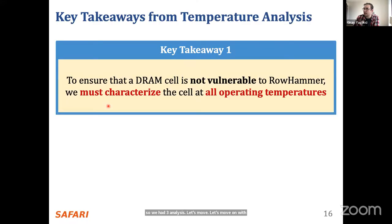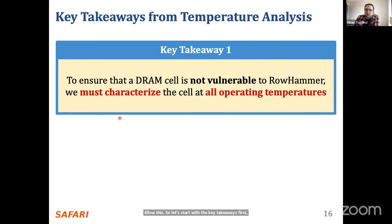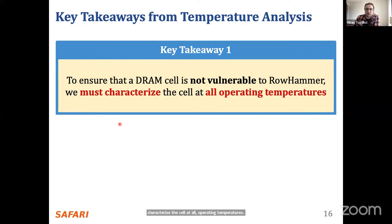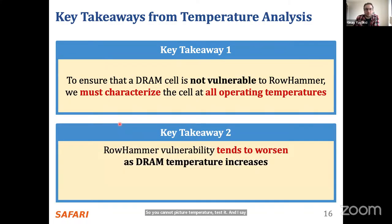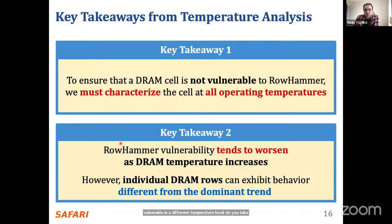The first key takeaway is that to ensure a DRAM cell is not vulnerable to row hammer, we have to characterize the cell at all operating temperatures. You cannot pick one temperature, test it, and say the cell is not vulnerable — it might be vulnerable at a different temperature level. Key takeaway two says that row hammer vulnerability tends to worsen as DRAM temperature increases; however, individual DRAM rows can exhibit behavior different from the dominant trend, so we see exceptional cases.